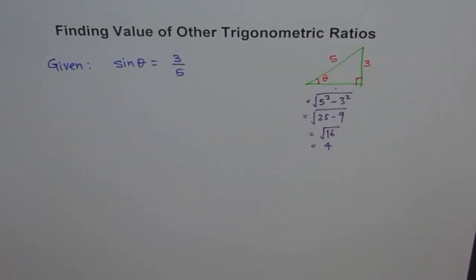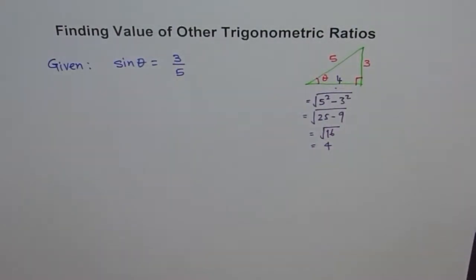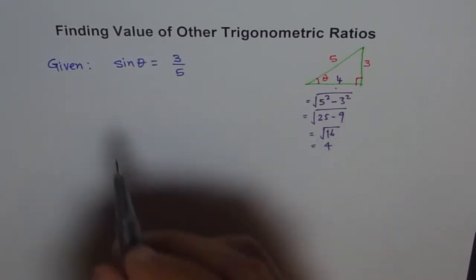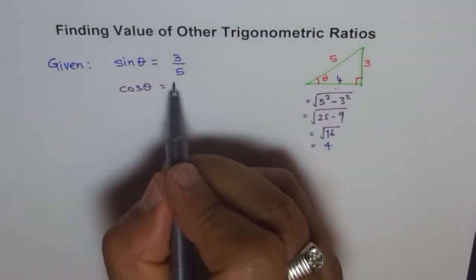Let me write 4 in this color, showing that this is a calculated value. So, now we have a right angle triangle with all 3 sides given. Now, once we have this, then we can find what is cos theta. So, cos theta should be 4 over 5.